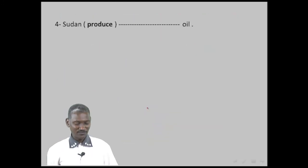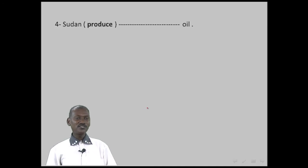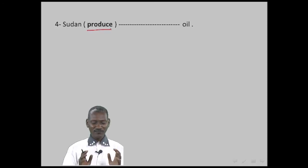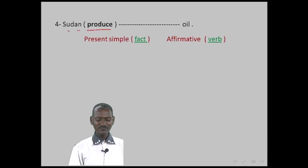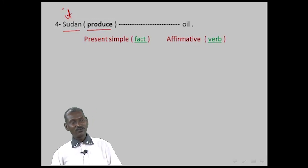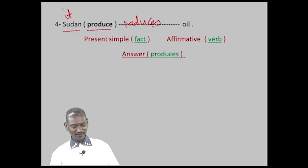Example four: 'Sudan produce oil.' This is a fact, so it is Present Simple and affirmative. 'Sudan' refers to 'it', so in the affirmative we add S to the verb 'produce'. Answer: 'Sudan produces oil.'